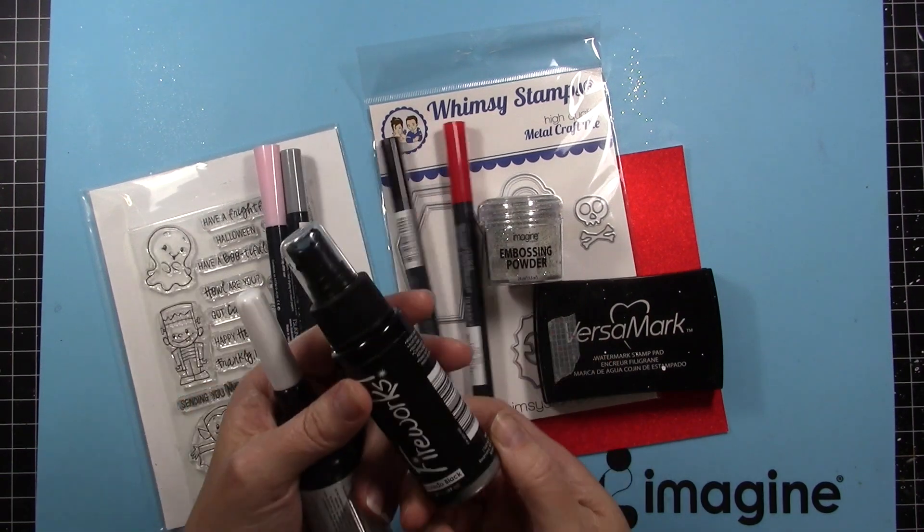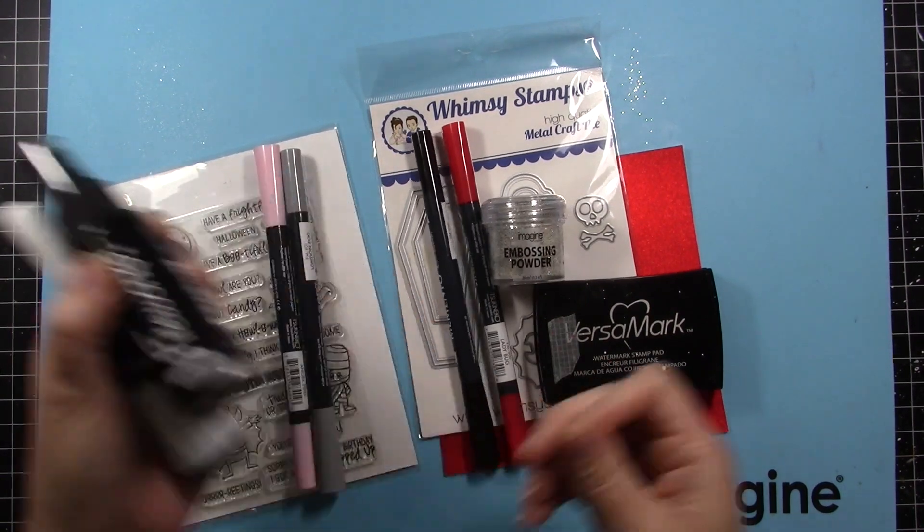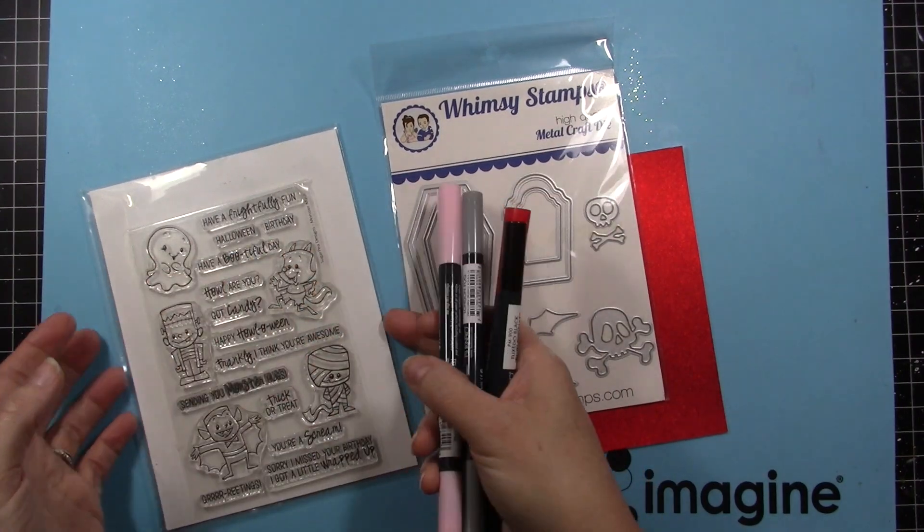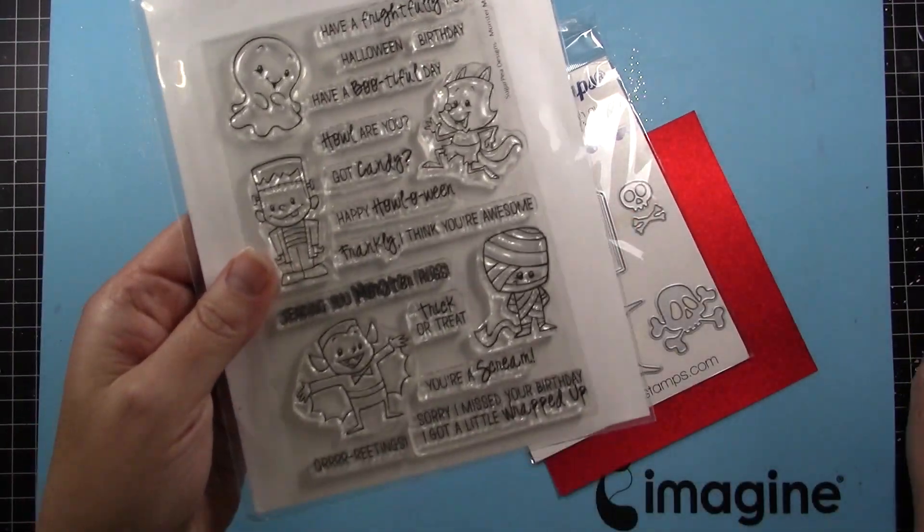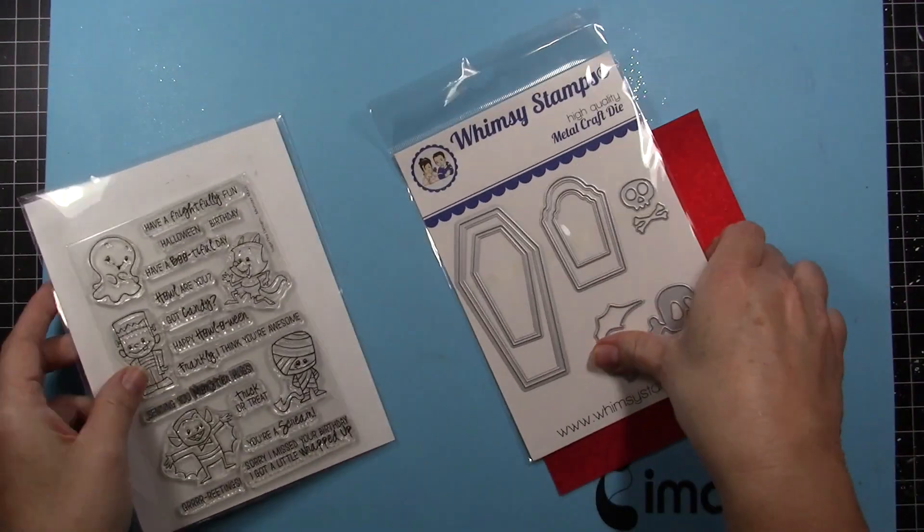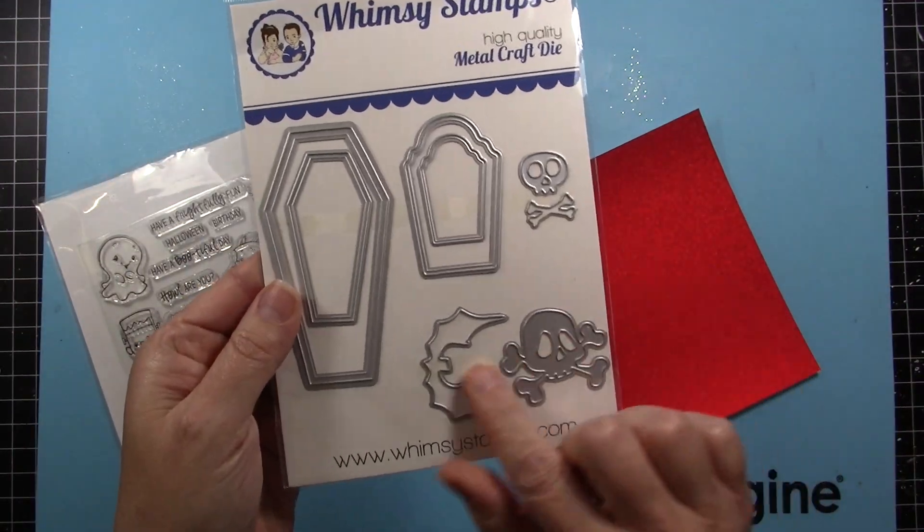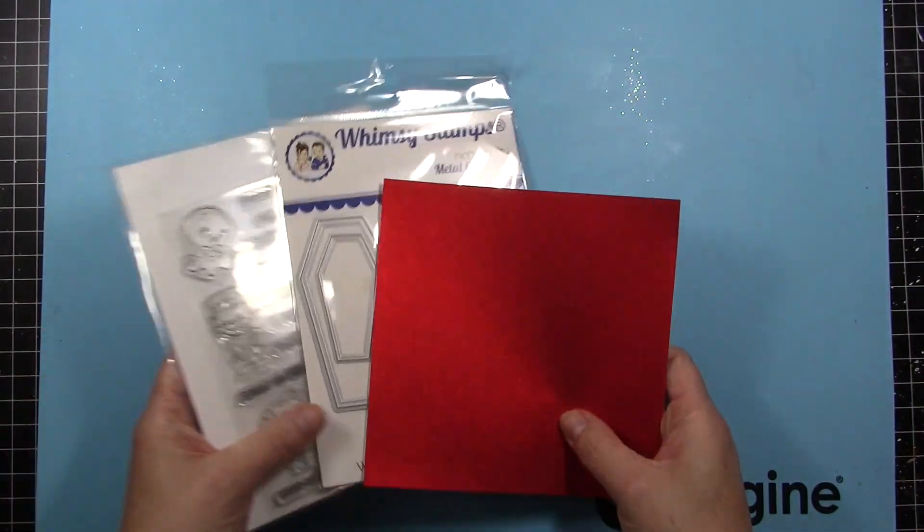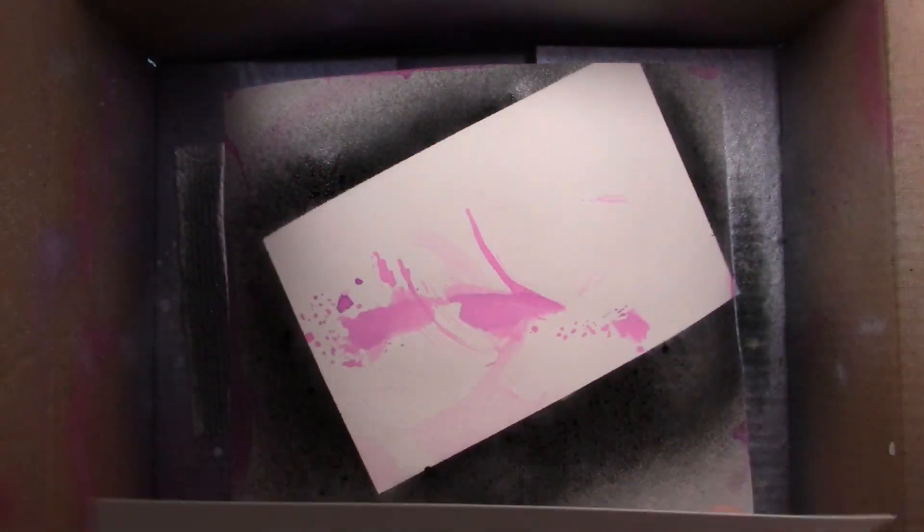I'll be using Tuxedo Black Irresistible, Fireworks Tuxedo Black, as well as a number of Memento markers, a Sugar Pea Designs stamp set called Monster Mash along with the coordinating dies, and this cute Whimsy Stamps die set that has coffins in it. I'm going to actually use the coffins for the tag.